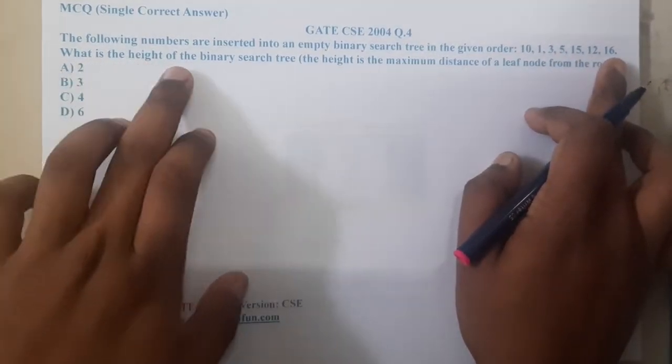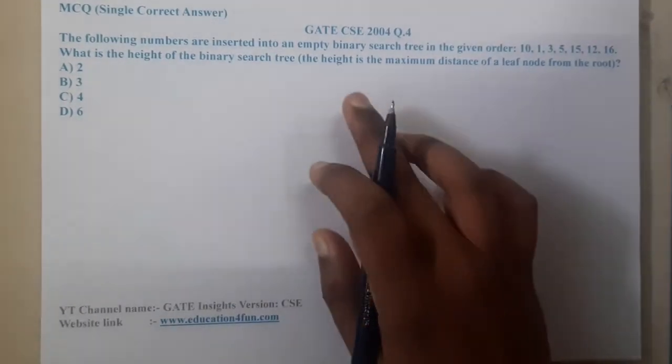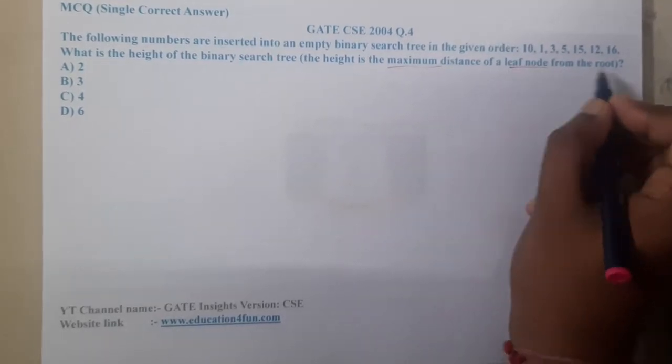What is the height of the binary tree? They are asking the height of the binary tree. They give the definition for height: the height is the maximum distance between the leaf node to the root node.